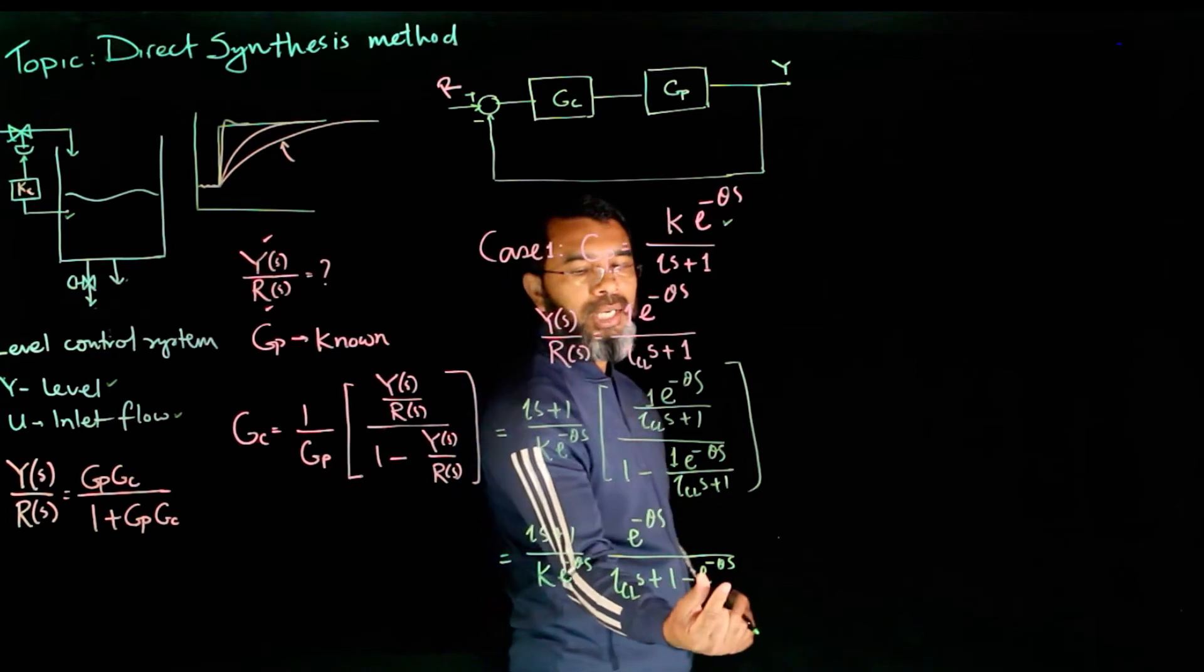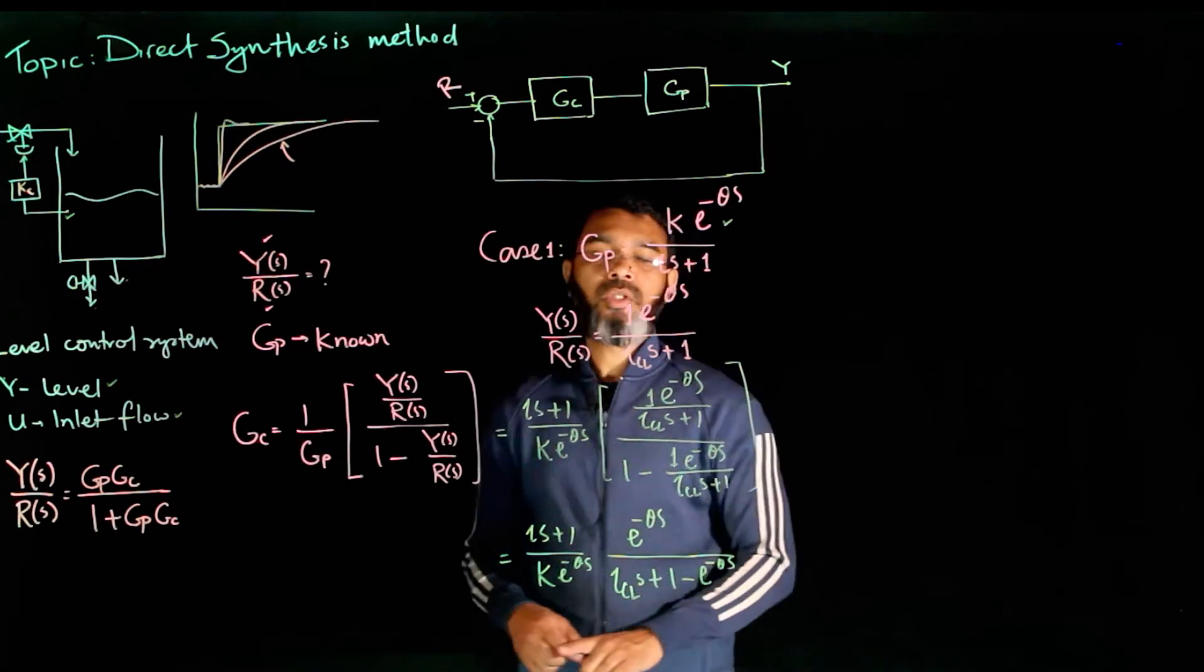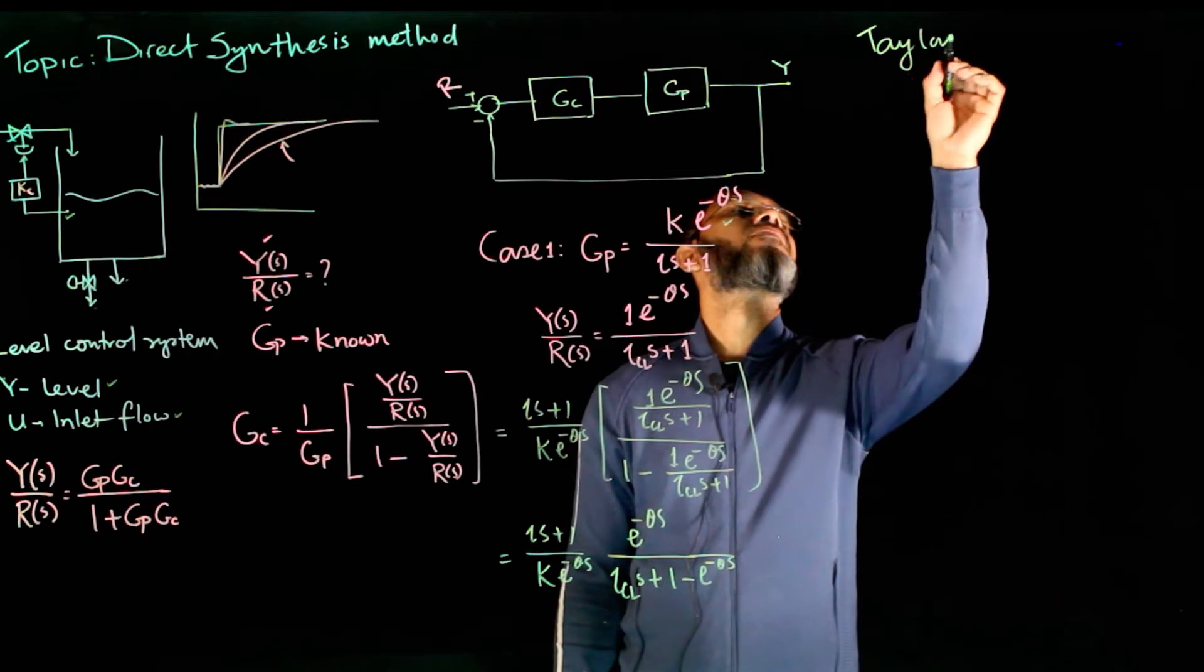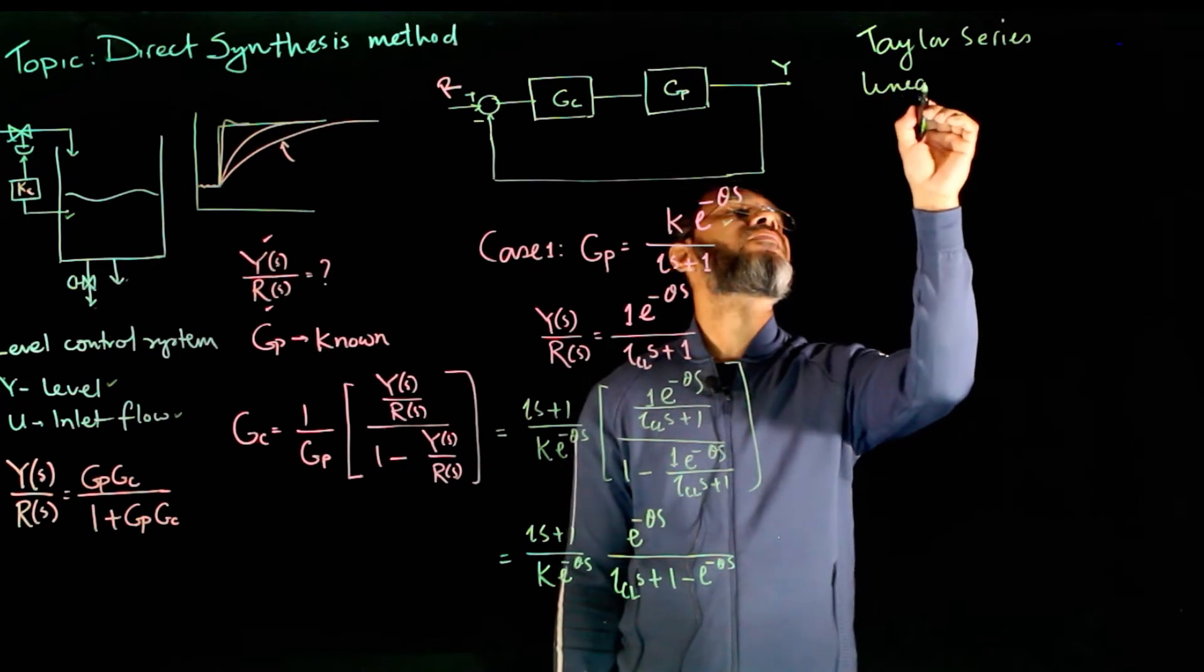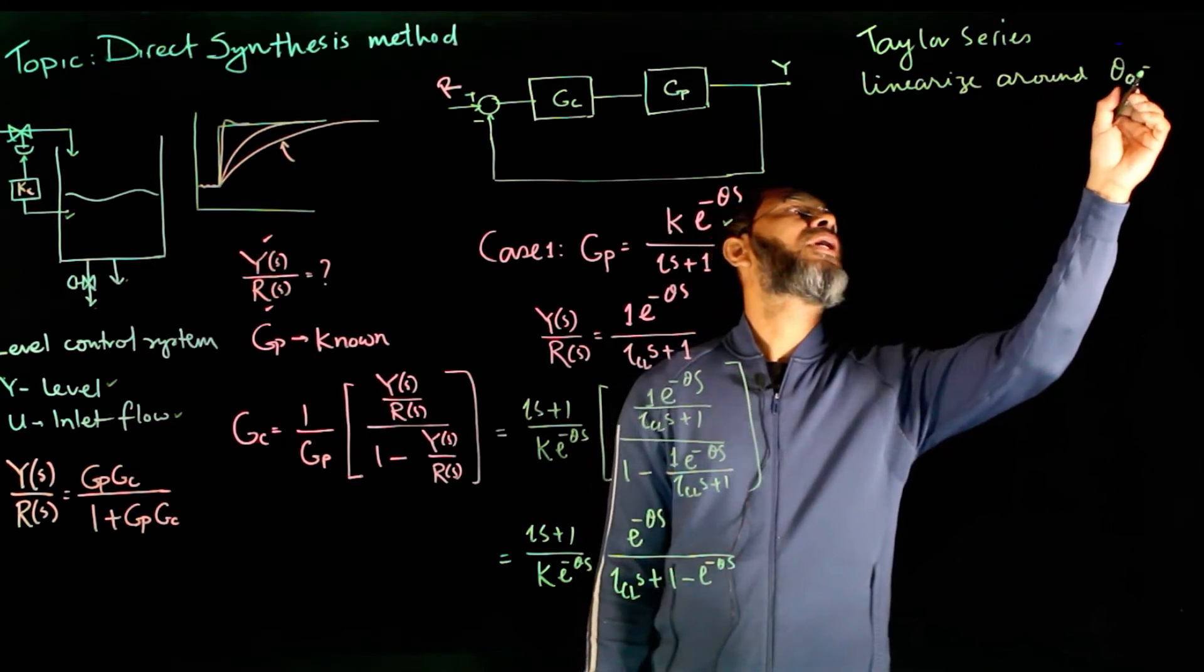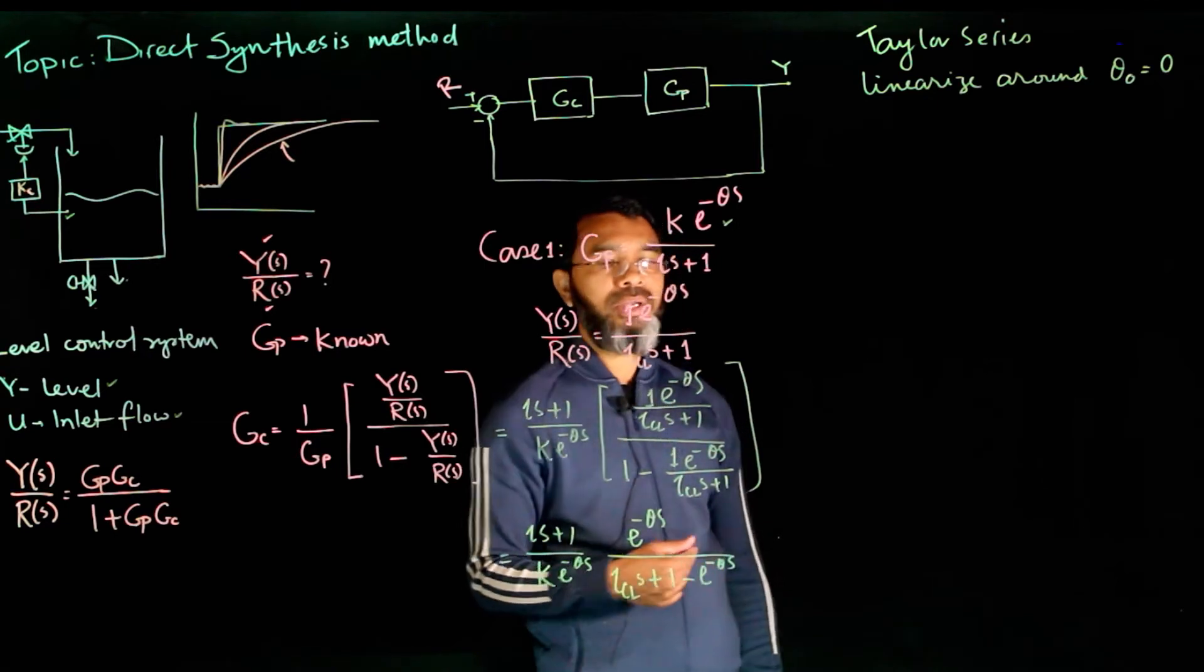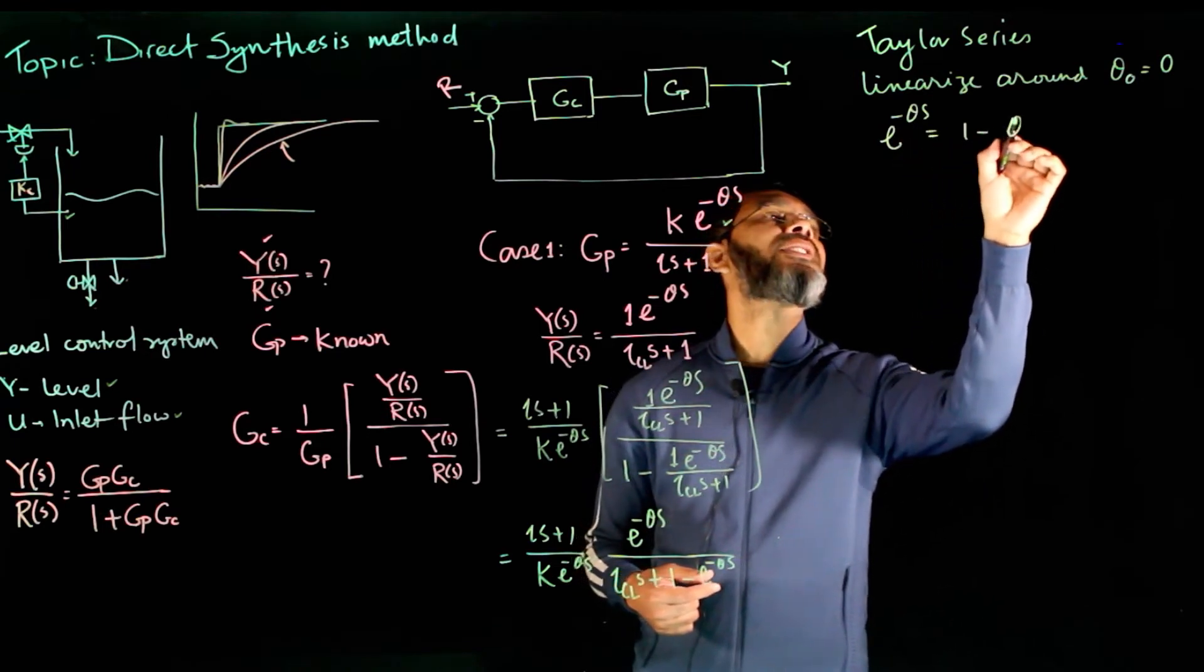Now you see that there is a nonlinear term in the denominator. To formulate this controller in the standard form, we need to linearize this term. To linearize this term we can use the Taylor series and linearize around θ₀ equals 0, simply meaning that this linearization is valid when theta is small, meaning we're linearizing around 0.